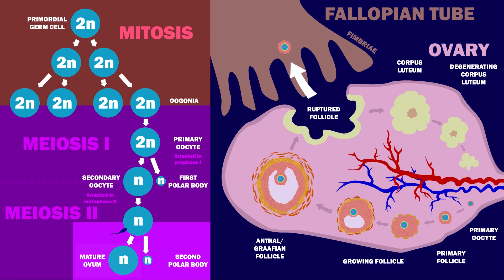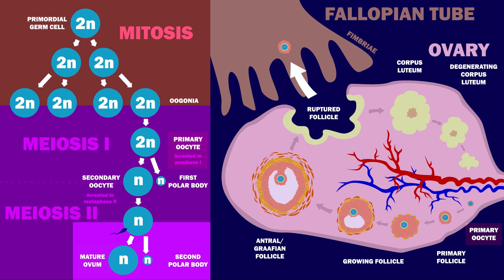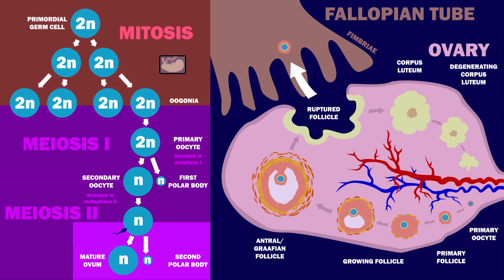Oogenesis is the production of an ovum, or egg cell. It starts with the development of primary oocytes, which occurs at the fetal stage. From birth, a woman already has all her primary oocytes.